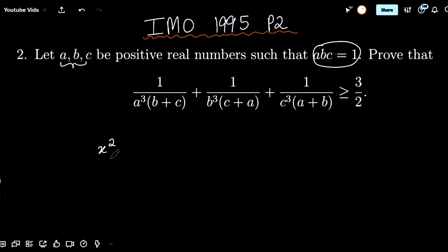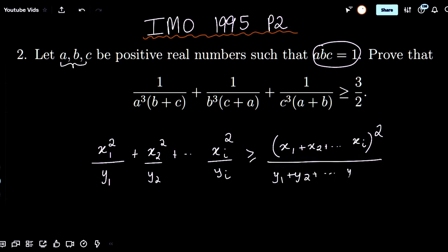T2's Lemma states that if you have x1 squared over y1 plus x2 squared over y2 dot dot dot up to xi squared over yi, it is greater than or equal to x1 plus x2 all the way up to xi whole squared over y1 plus y2 plus dot dot dot yi. This is a simple application of Cauchy Schwartz.